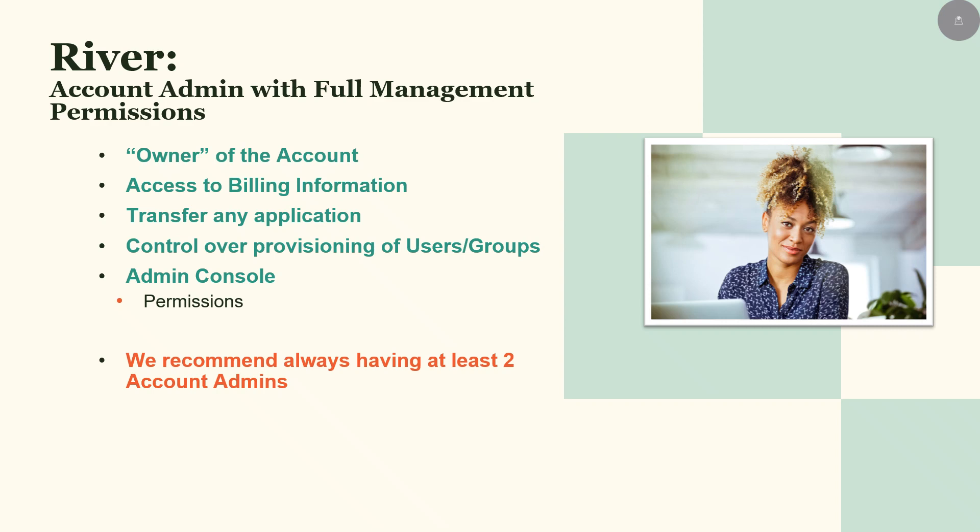This is the first admin role we're discussing that has access to the admin console, a powerful set of tools used to manage the account. From the Users tab, you can add and deny users. From the Apps tab, you can view all of the applications in the account. From the Permissions tab, River has the ability to appoint other account admins that can help manage the account.